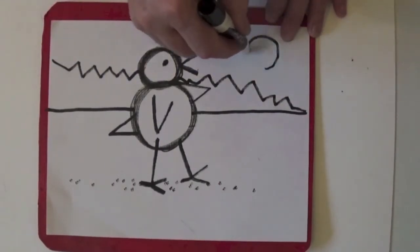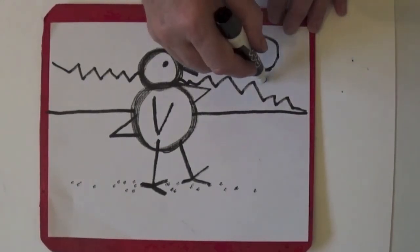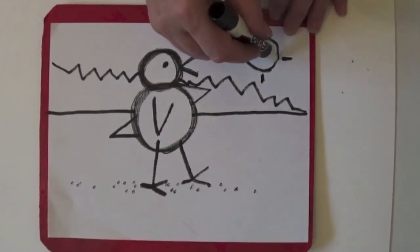It's a sunny day, so the sky has a sun in it. Up and down, up and down, back and forth, back and forth, dot, dot, smile.